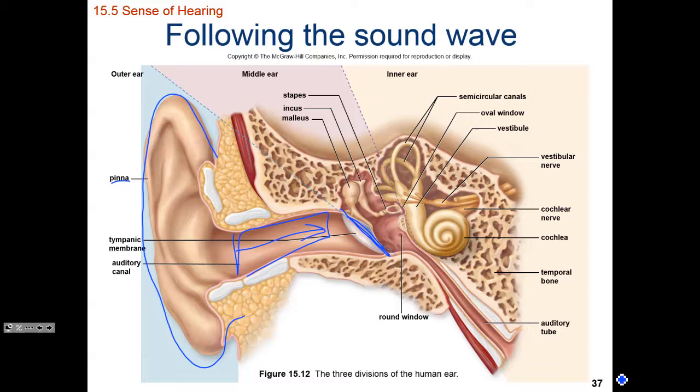The word 'tymp' is a root word for drum. So when we say the tympanic membrane, think of the eardrum — or think of the tympani, the large drum in the percussion section of a band.